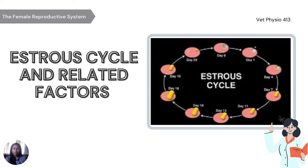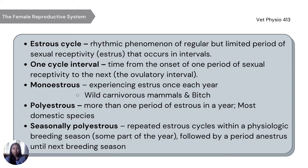The estrous cycle is a rhythmic phenomenon of regular but limited periods of sexual receptivity — the estrus — that occurs at intervals. One cycle interval is timed from the onset of one period of sexual receptivity to the next, or the ovulatory interval. Monoestrus is experiencing estrus once each year; examples include wild carnivores, mammals, and bitch. Polyestrus is more than one period of estrus in a year, occurring in most domestic species. Seasonally polyestrus refers to repeated estrous cycles within the physiologic breeding season, followed by a period of anestrus until the next breeding season.